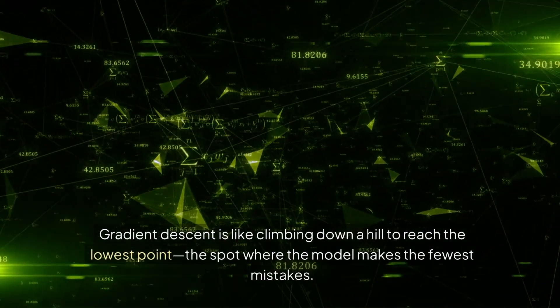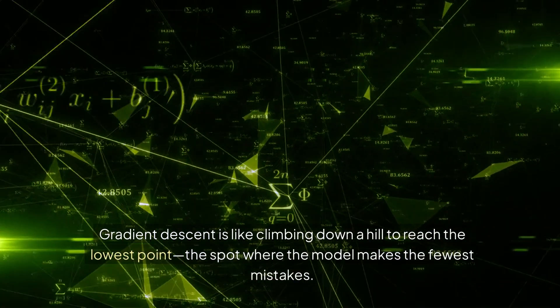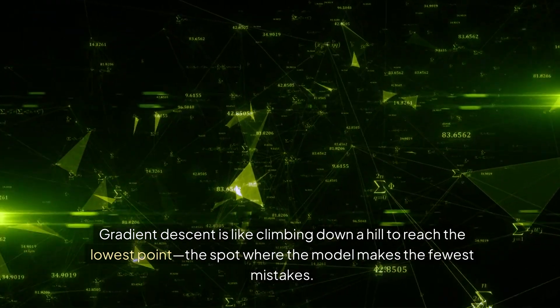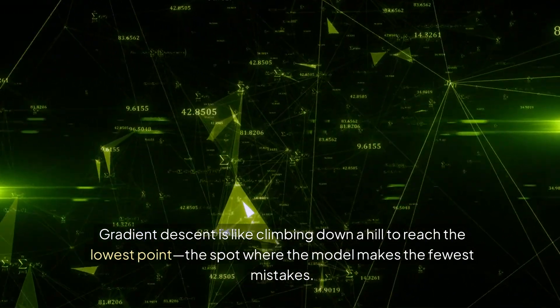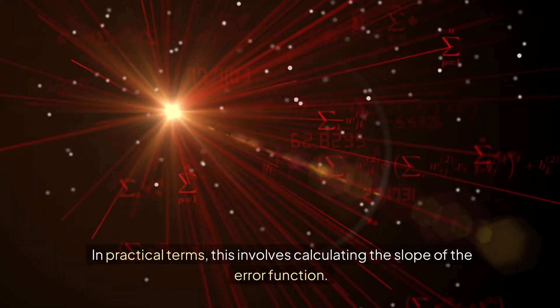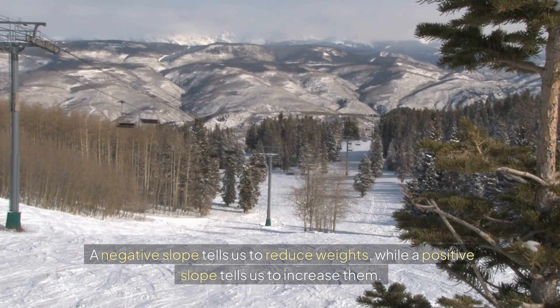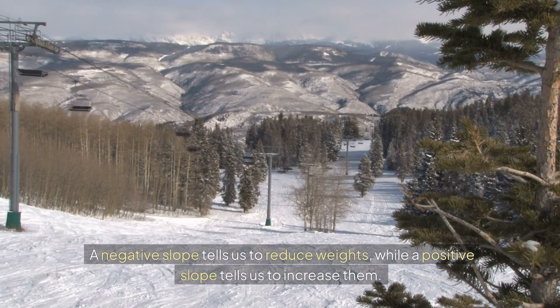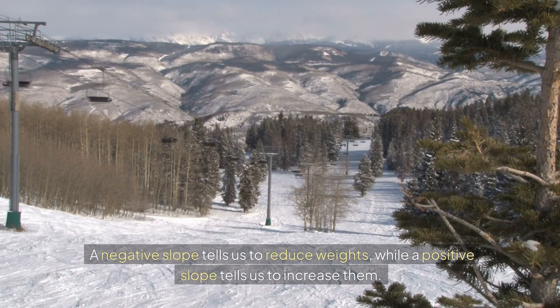Gradient descent is like climbing down a hill to reach the lowest point—the spot where the model makes the fewest mistakes. In practical terms, this involves calculating the slope of the error function. A negative slope tells us to reduce weights, while a positive slope tells us to increase them.